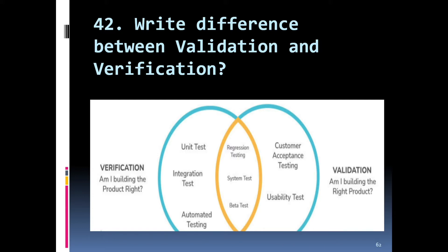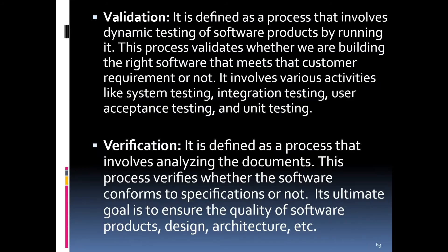In verification, the activities include unit testing, integration testing, automated testing, regression testing, and system testing. For validation, there is regression testing, system testing, and beta testing as common activities, but also some exceptions such as customer acceptance testing and usability testing.